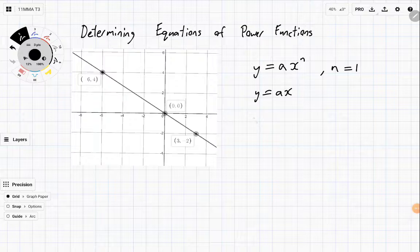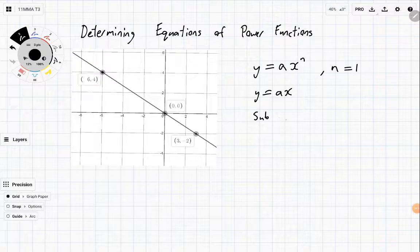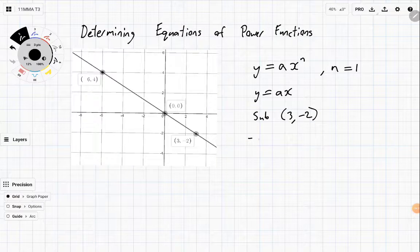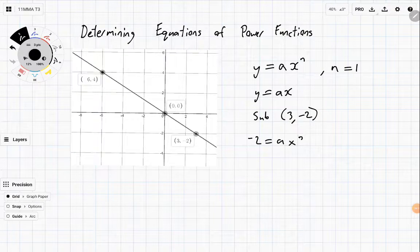In this particular case, we can see that it goes through the point (3, -2), so we can sub that in. We get -2 = a × 3. Move that to the other side and we get a = -2/3.